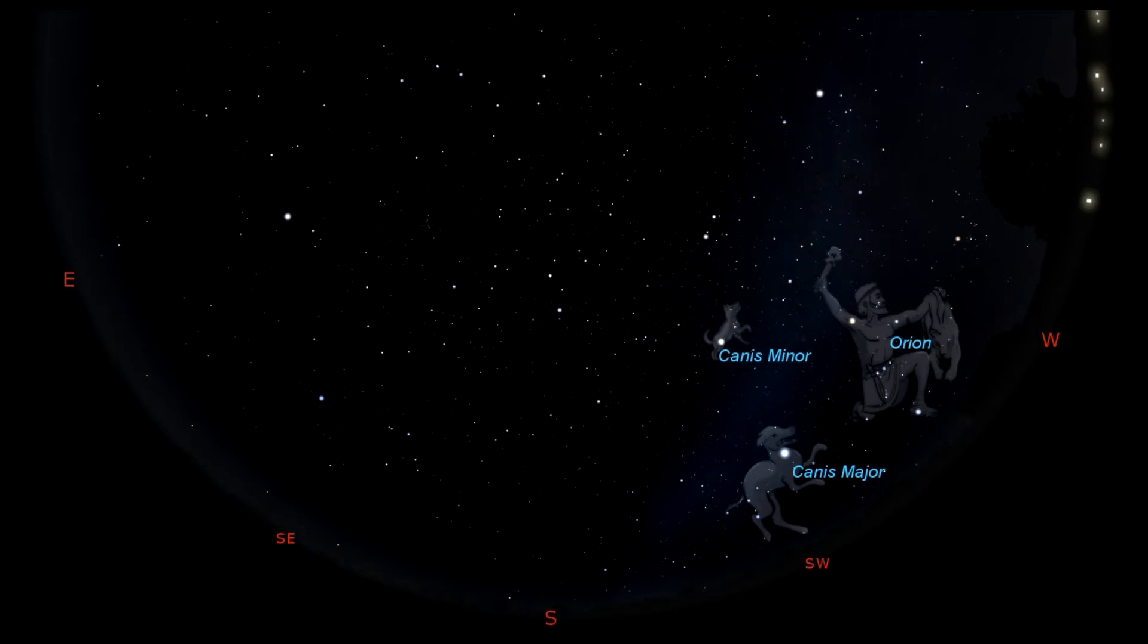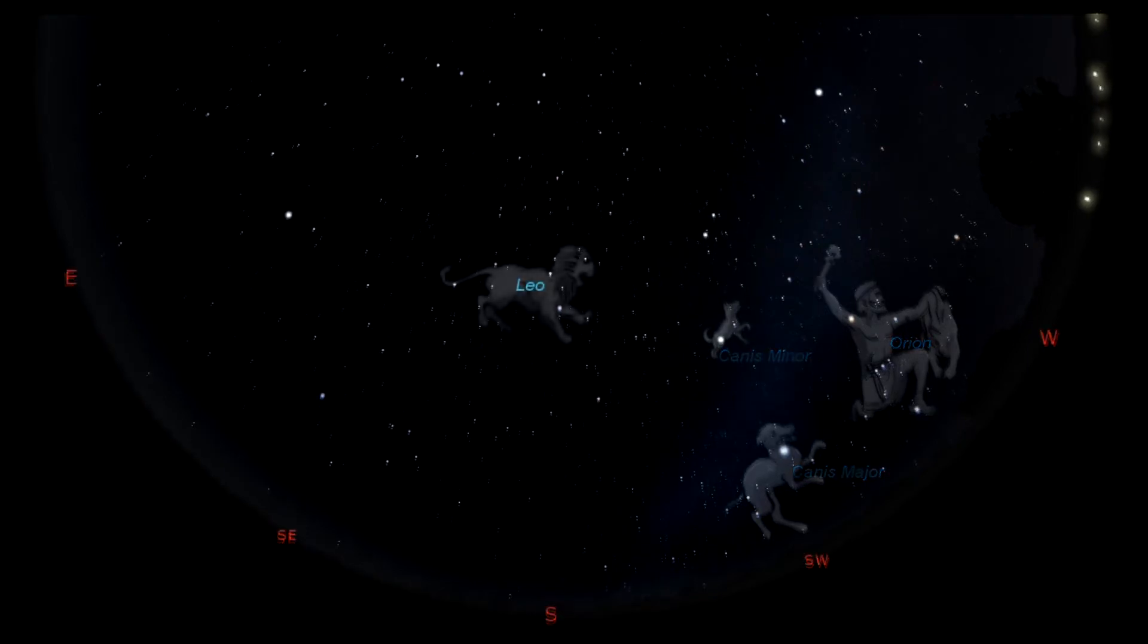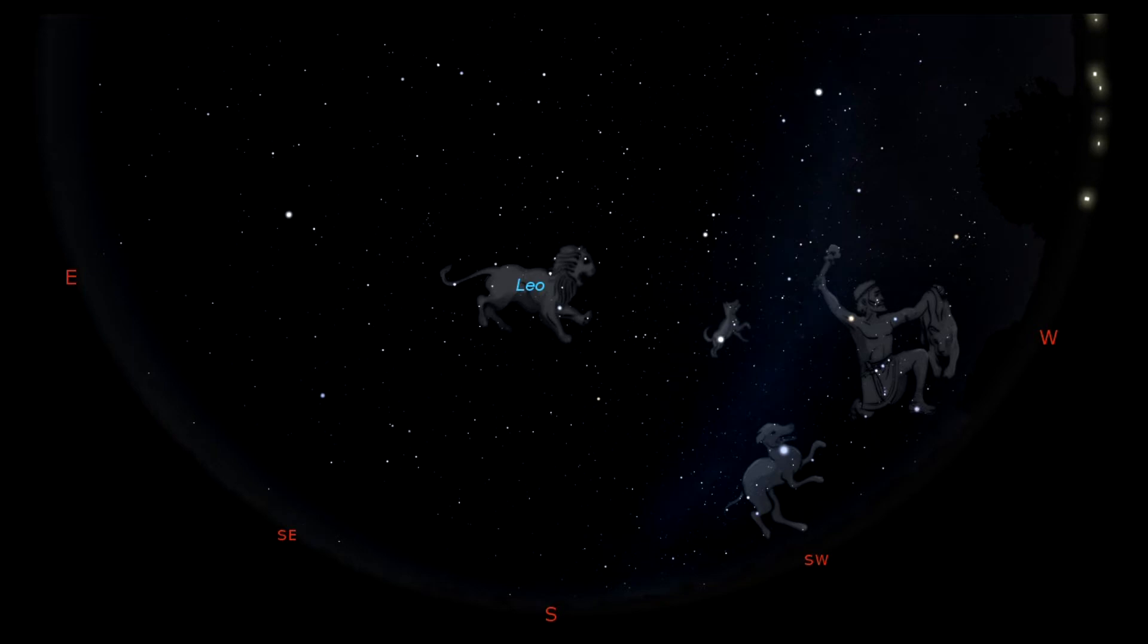High overhead, we have the king of the spring season, Leo the Lion, whose head and neck looks like a backwards question mark shaped group of stars, or maybe a farmer's sickle, and a right triangular group of stars marks the back end of the lion.